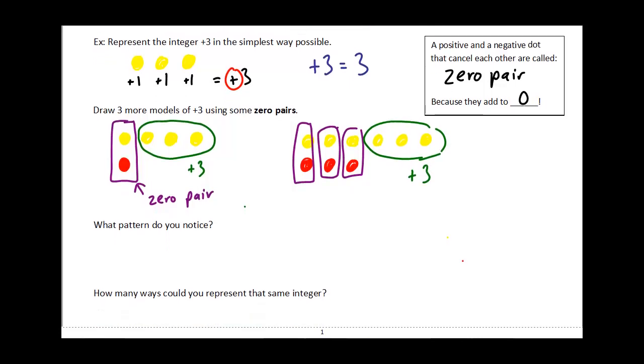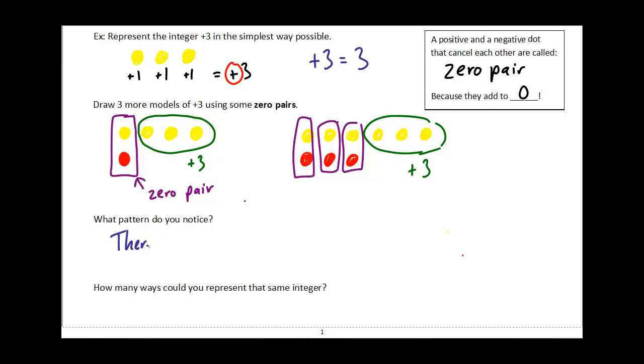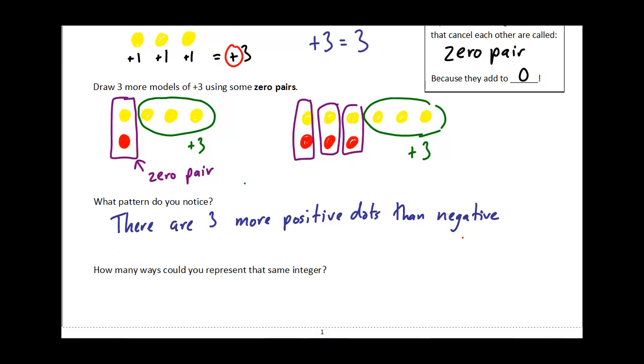What pattern do you notice? We can draw our positive 3 integer in a whole bunch of different ways, as long as there are three more positive dots than negative. I could go on forever here. I could draw like a million and three yellow dots and then a million red dots, and that would still just represent the integer 3.